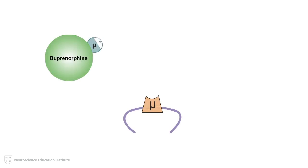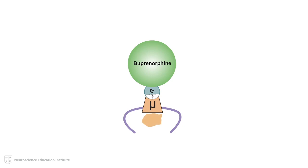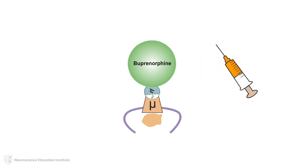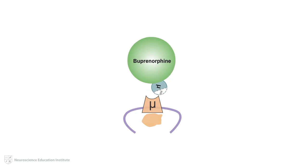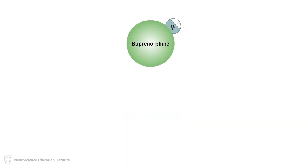Buprenorphine acts as a partial agonist at the mu opioid receptor. Thus, the neurotransmission resulting from binding of buprenorphine to the mu opioid receptor is less than that seen for full mu opioid receptor agonists, such as methadone or heroin. In fact, buprenorphine will act as an antagonist in the presence of a mu opioid receptor agonist, blocking its effects. Due to this mechanistic action of buprenorphine, it may precipitate active withdrawal symptoms in individuals currently using heroin.